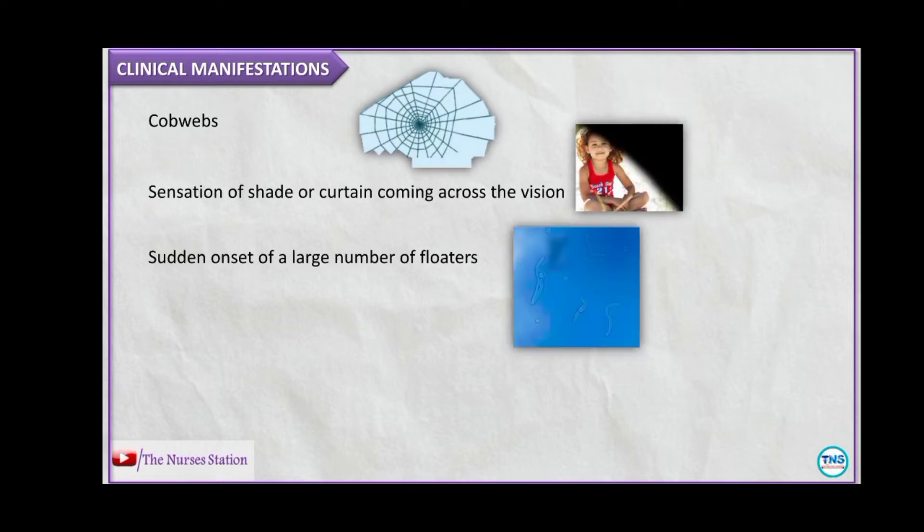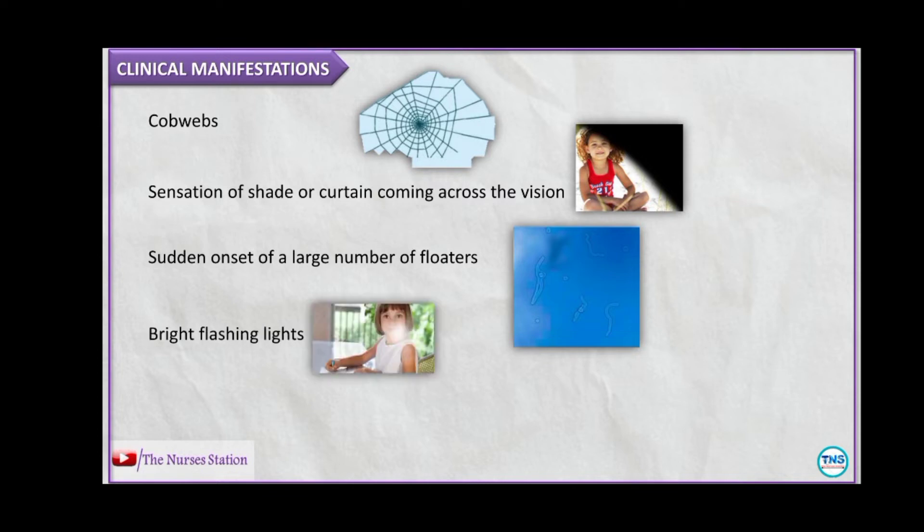The clinical manifestations of retinal detachment include seeing cobwebs, sensation of a shade or curtain coming across the vision, sudden onset of a large number of floaters — these are small dark spots or lines that float across your vision — bright flashing lights, and blurred vision.